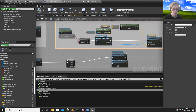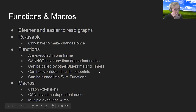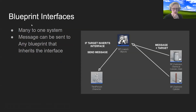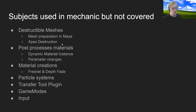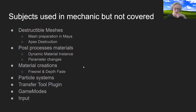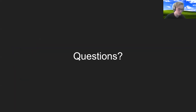Things I haven't covered but are in the scene include destructible meshes using the Apex Destruction plugin, post-process materials, material creation, depth of field, particle systems, a transfer tool plugin, game modes, and player input. But you can get the file and go through it, breaking it down bit by bit to see how it actually works. In the last 15 minutes, you can ask questions and I'll try to answer and demonstrate in engine. Does anyone have any questions, or is everyone a little overwhelmed with too much information?